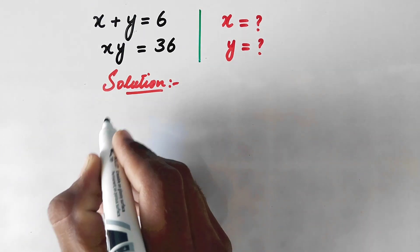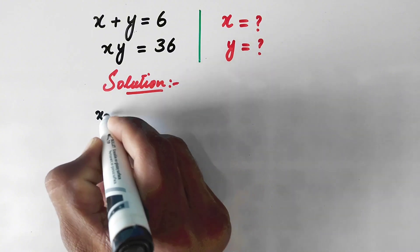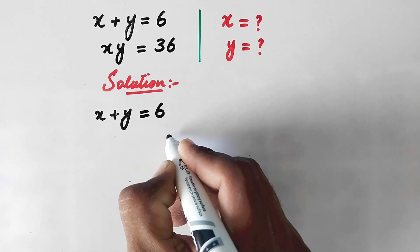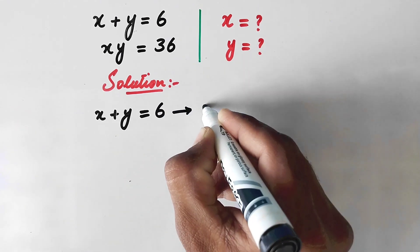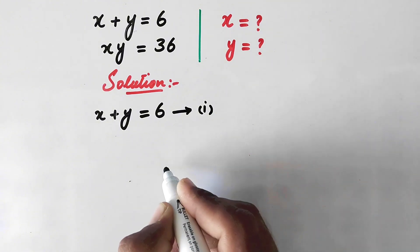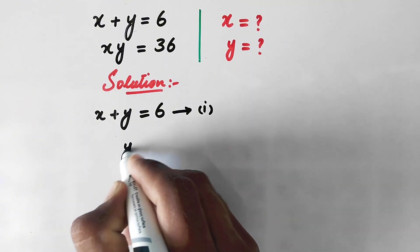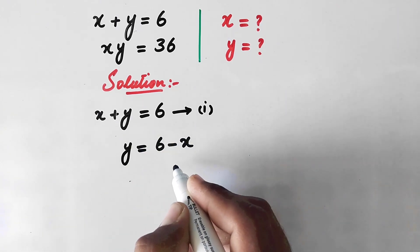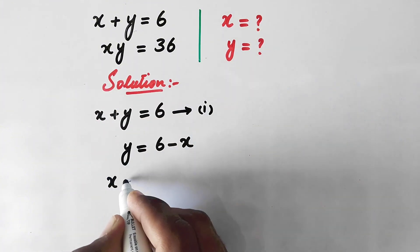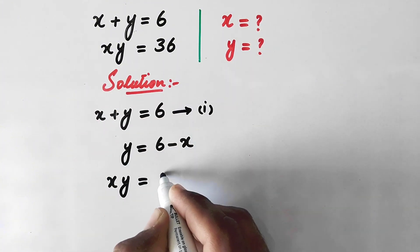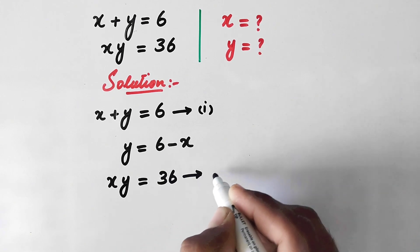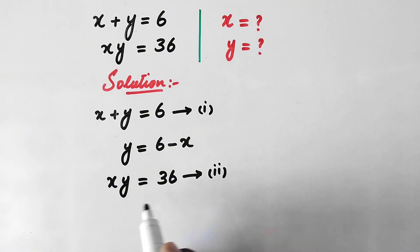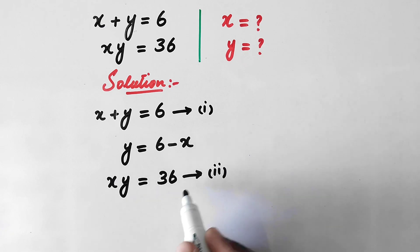We will rewrite the original equation x plus y equal to 6 and mark it as equation number 1. From here we get y equal to 6 minus x. Now we write the second equation x times y equal to 36 and mark it as equation number 2. We will substitute the value of y from equation 1 into equation 2.